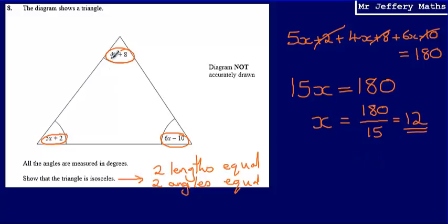Then what I can do is just substitute 12 into each of these expressions. So 4x plus 8, if x equals 12, that's going to give me 56 degrees for that angle at the top. 5x plus 2, that's going to give me 62 degrees for that angle at the bottom. And then this here, 6 times 12 is 72 minus 10, that gives me 62 degrees.